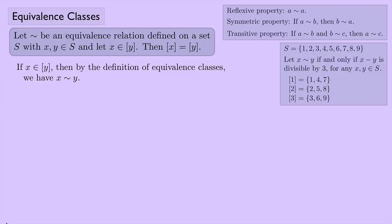To show two sets are equal, we show each is a subset of the other. First, show [x] ⊆ [y]. Let a be an element of [x]. We want to show that a is also an element of [y], which would establish [x] ⊆ [y].